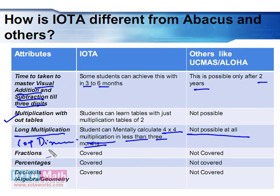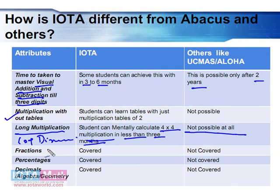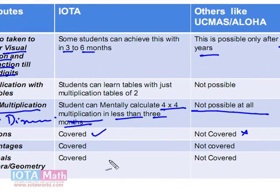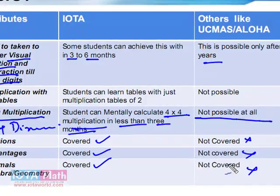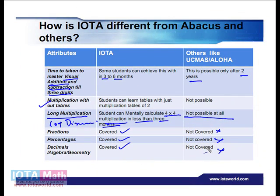Regarding syllabus coverage: fractions are covered in IOTA but not in UC Maths; percentages covered, not covered; decimals, algebra, and geometry covered in IOTA, not covered in UC Maths. We have now given you all the differences between IOTA and other Abacus systems. If you want more clarification, you can visit our headquarters or call us to understand the differences in more detail. Thanks a lot — we look forward to hearing from you.